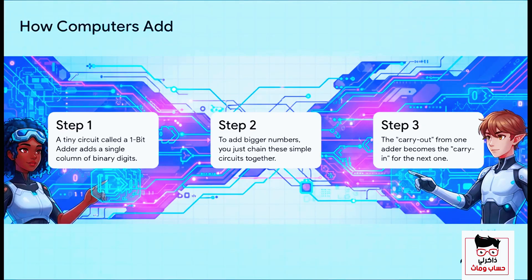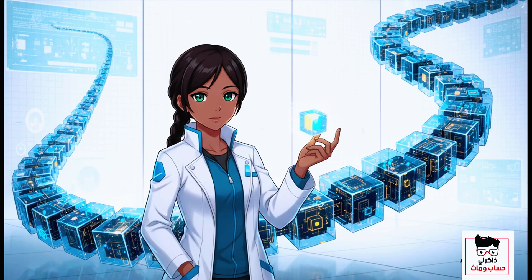So using this on-off logic, engineers created these tiny little circuits called 1-bit adders. Each one is a simple little building block, and it does just one thing — it adds a single column of binary numbers. By chaining them together, the carry out — that little one you carry over from the first adder — just becomes the input, the carry in, for the next one in line. And this is exactly where those terms you've probably heard, like 32-bit or 64-bit processors, come from. It's just talking about how many of these little 1-bit adders are essentially chained together, which tells you how big of a number the computer can handle in one single go.